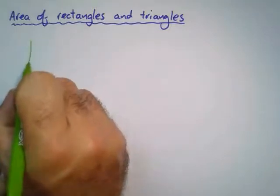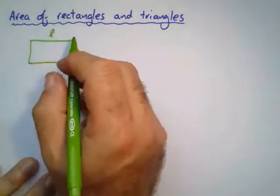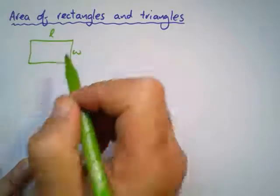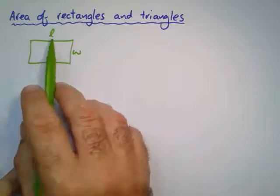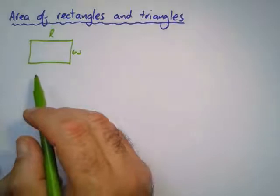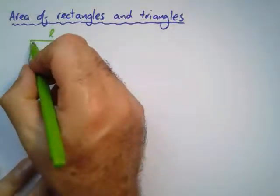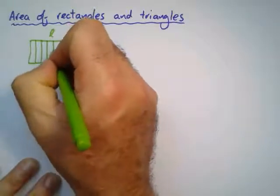If I have a rectangle and we call this the length and this the width—some books call it the breadth—so length and width. If I want to know the area, I want to know the square units.